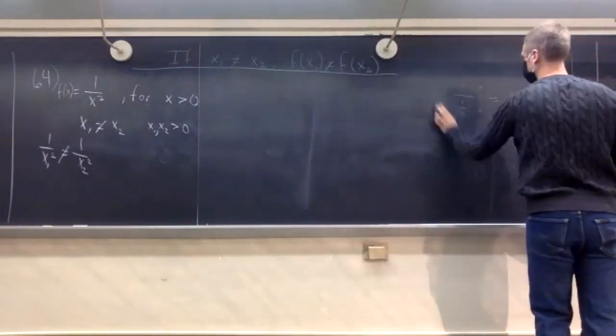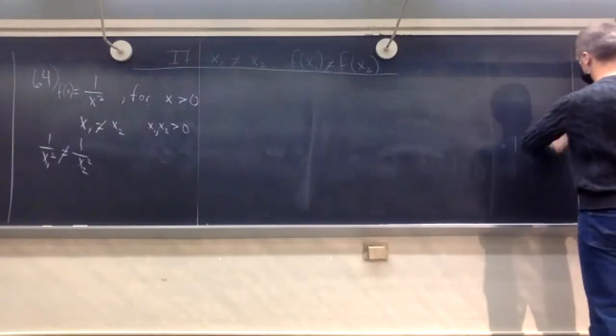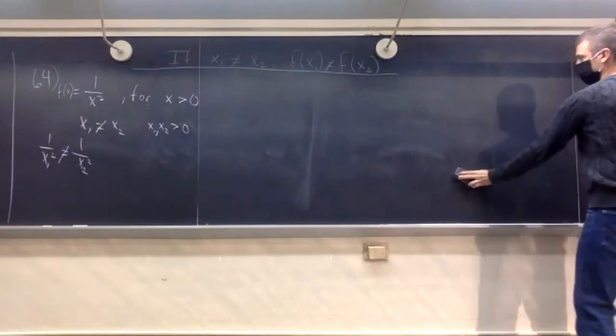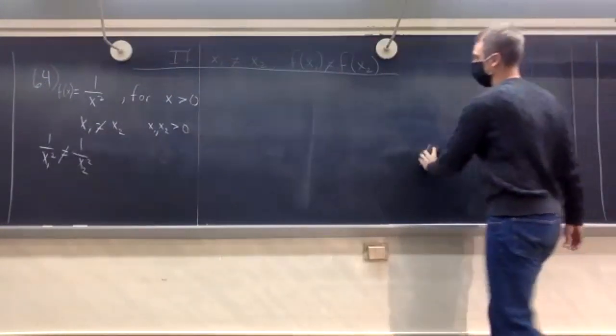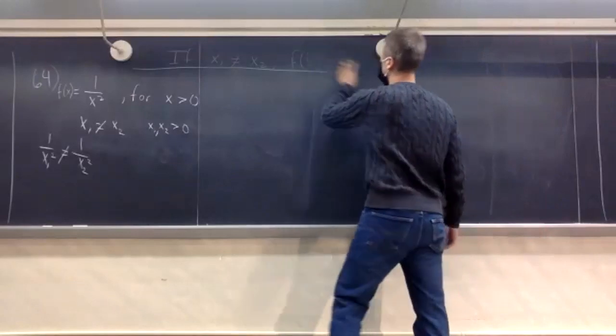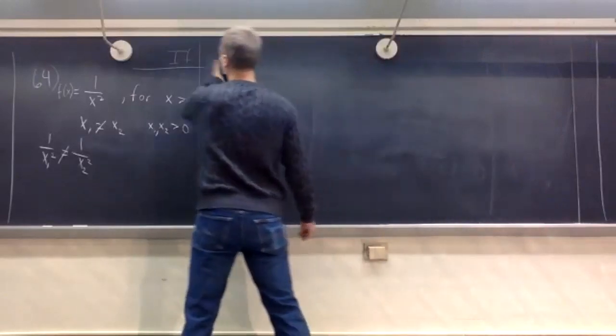That's all for section 2.8 — it's about finding one-to-one functions, finding inverses, and showing things are inverses of each other.